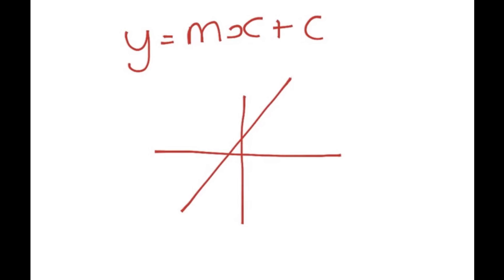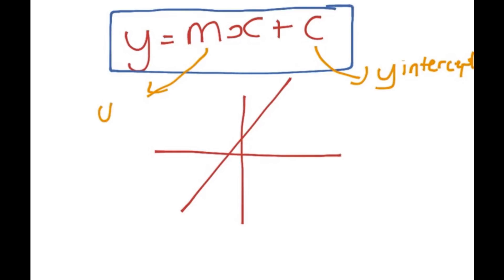It's very important to realize the equation of any straight line is represented by y equals mx plus c. It's also very important that you understand what each term in this equation represents. First of all, the c represents the y-intercept, and the m represents the gradient.